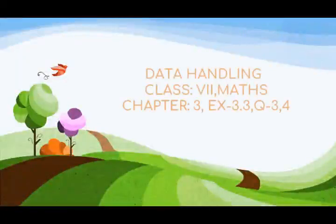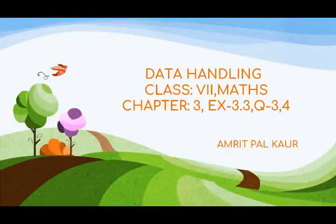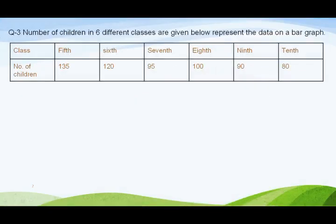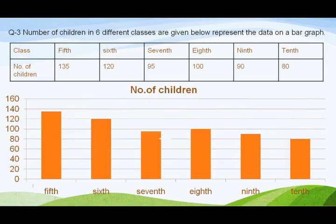Hello students, aaj hum karenge data handling chapter number 3, exercise 3.3. Question number 3 is: 'Number of children in 6 different classes are given below. Represent the data on a bar graph.' This graph shows how many children are in each class from 5th to 10th in a school. This information is given to you.